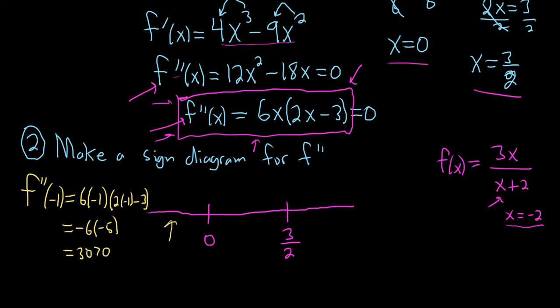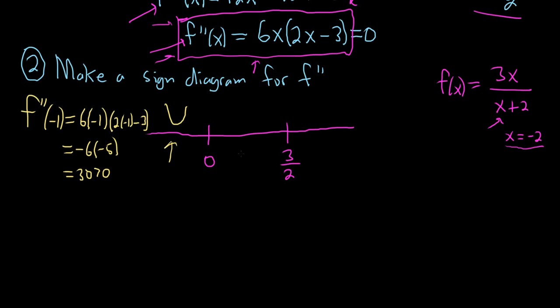Whenever the second derivative is positive, it's concave up. So that's concave up. Positive second derivative, concave up. Negative second derivative, concave down. Now we do the same thing. We just pick a number over here. How about 1? You can pick any number you like, so I'm picking easy numbers.